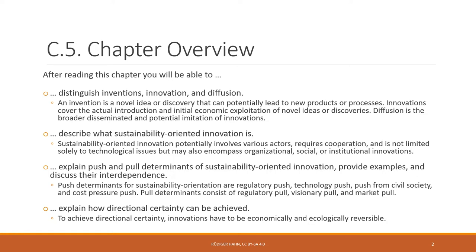You'll then be able to explain how directional certainty can be achieved. You'll learn that to achieve directional certainty, innovations have to be economically and ecologically reversible. When we start with an innovation and bring it to market, we do not necessarily know from the very beginning whether it is truly sustainable in all its forms and facets. If it turns out to be not as sustainable as we thought, we need to be able to take it back — that's what directional certainty and economic and ecological reversibility is about.